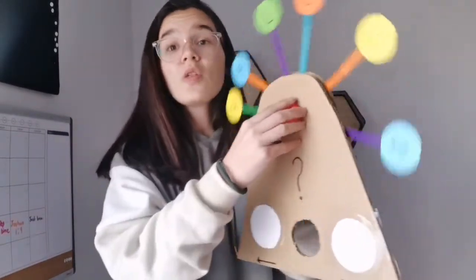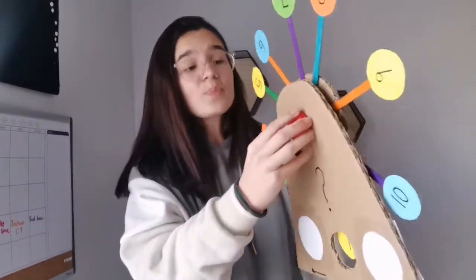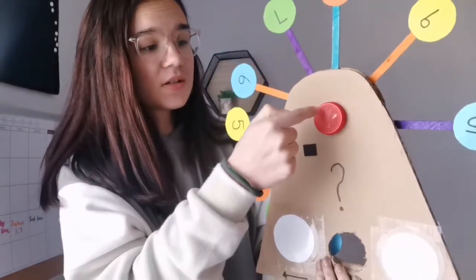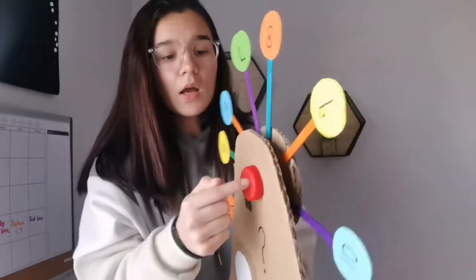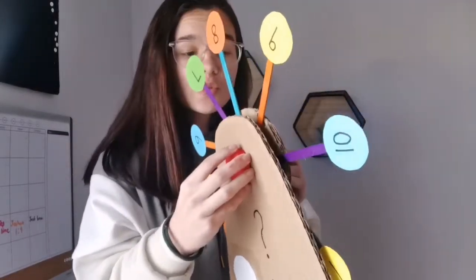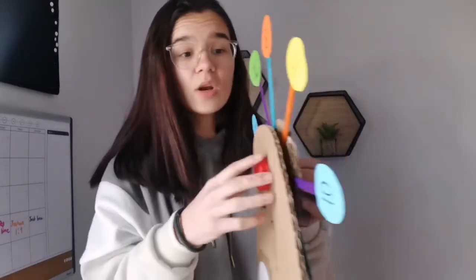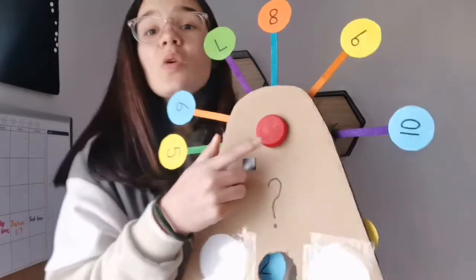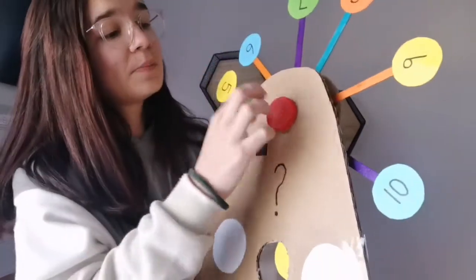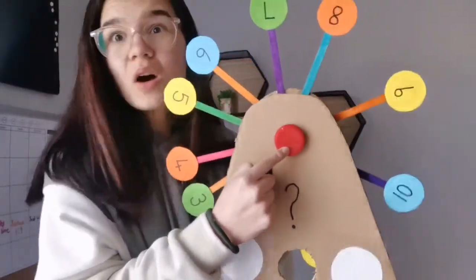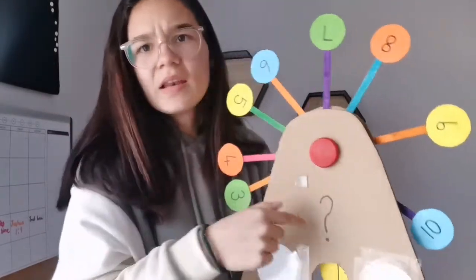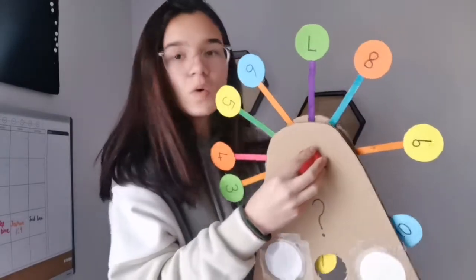I used a skewer stick. What you do is poke a hole through all four pieces of cardboard, then you take a skewer stick as long or as short as you want depending on how far back you want your spinner to be.